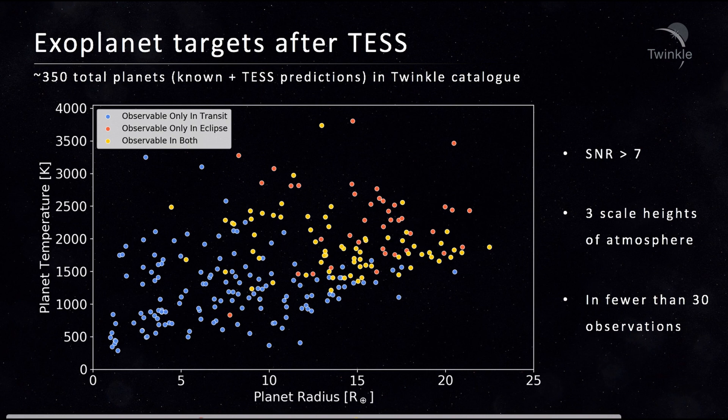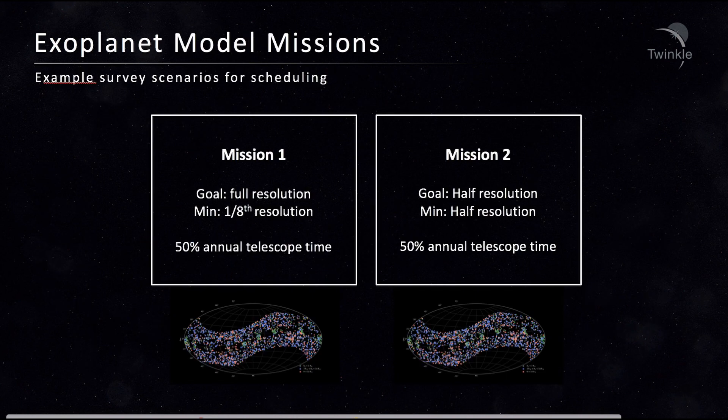Many of these planets will be observable through transmission spectroscopy, others in emission, and some using both techniques. The time required to observe each of these has been used to simulate two examples of what an exoplanet survey with Twinkle could look like.